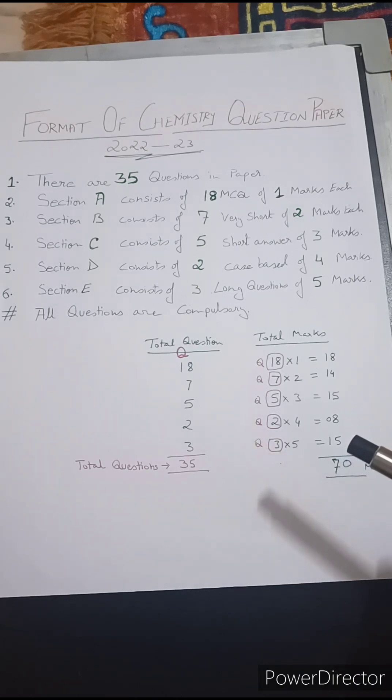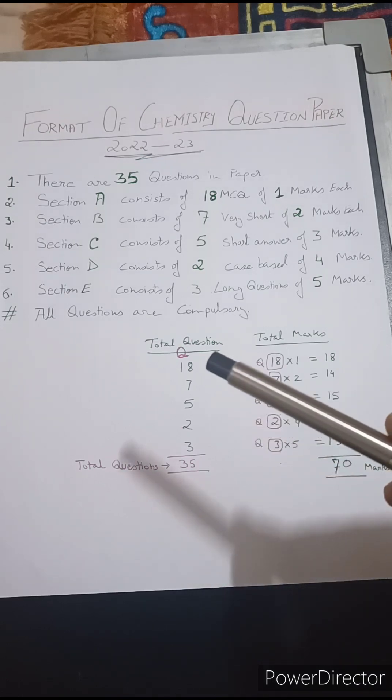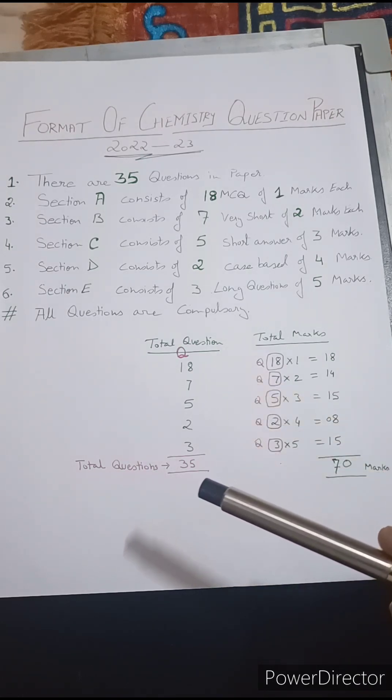If you sum up all these marks, it comes to be 70 in all, and if you sum up all the questions, it comes out to be 35 in all.